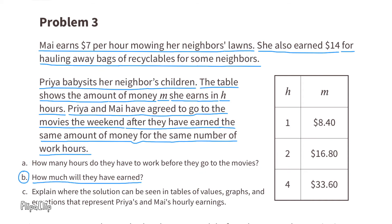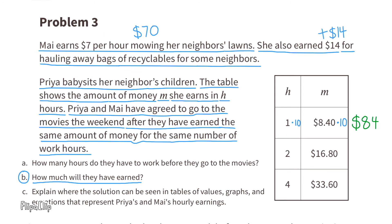Part B: how much would they have earned? 10 hours times $8.40 is $84. After 10 hours, they would have earned $84. We can verify with Mai: $7 times 10 hours equals $70, plus the $14 she was paid for hauling away recyclables, gives a total of $84 after 10 hours.